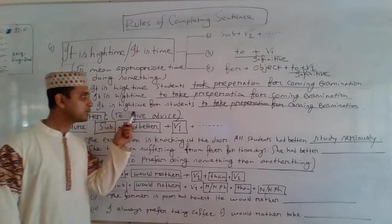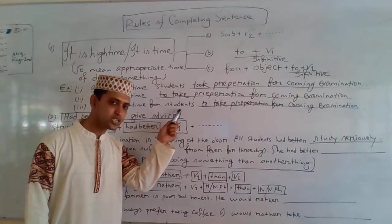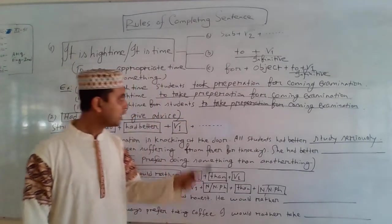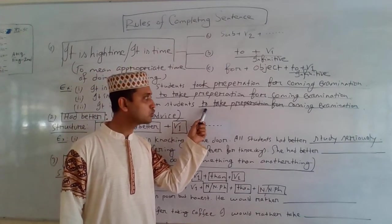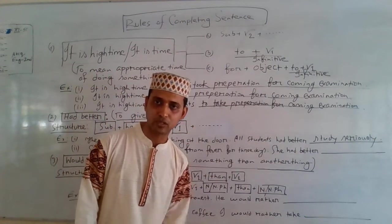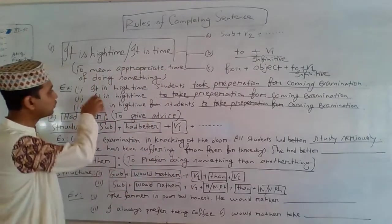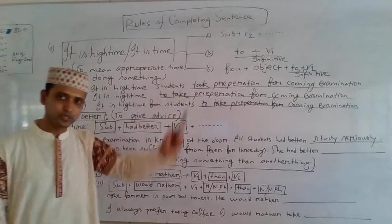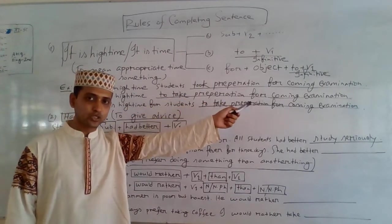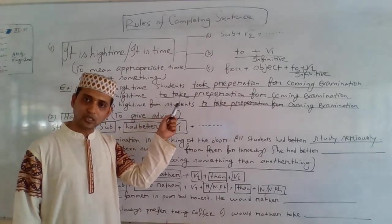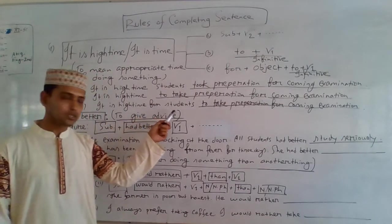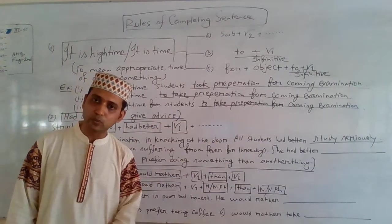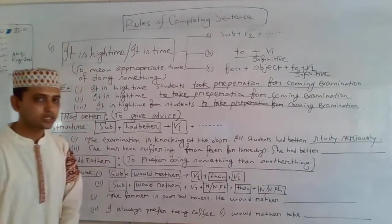Third example: 'It is high time for students to take preparation for coming examination.' Here, we are getting 'for' and 'students' as object. After 'for' we get a noun as object, and then we use to + V1: 'to take preparation for coming examination.' To summarize the three sentences: 'It is high time students took preparation for coming examination' — after subject, we use V2. 'It is high time to take preparation for coming examination.' 'It is high time for students to take preparation for coming examination' — after 'high time' we get 'for' and object, so we use to + V1.